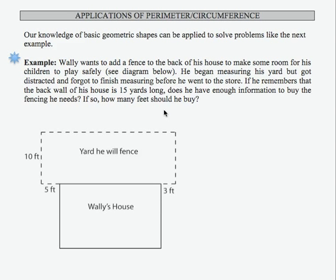We can solve applications of perimeter and circumference by using the information we know about how to find the distance around closed geometric objects. So let's see in this example how that's going to help us.